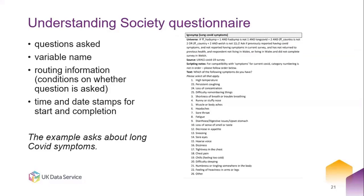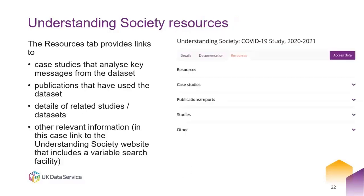Here's an example of a questionnaire from Understanding Society. It tends to show the questions that were asked, the variable name, and the routing information — meaning the conditions on whether the question is asked, because not all questions are relevant to all respondents. Sometimes surveys deliberately ask only certain sections of respondents certain questions so they can cover more questions, but that leads to slightly smaller sample sizes for those questions, which is something to watch out for.